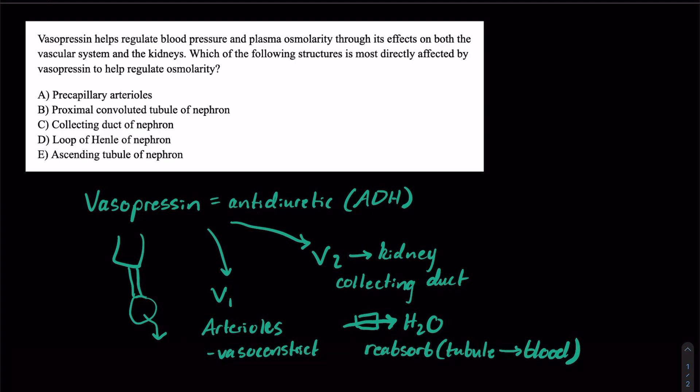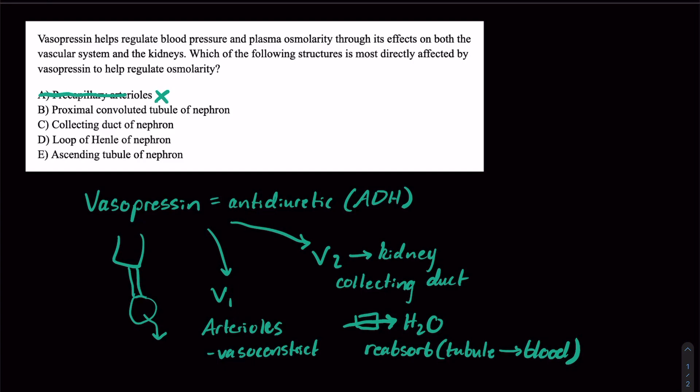Now this question is asking, which of the following structures is most directly affected by vasopressin to help regulate osmolarity? While vasopressin does act on the precapillary arterioles, that doesn't have as much to do with osmolarity, more the blood pressure. So we're left with all these different components of the nephron, and we should recognize the collecting duct as the primary site of action for antidiuretic hormone.